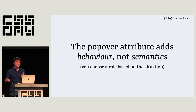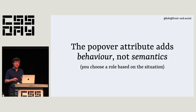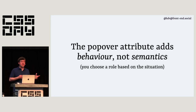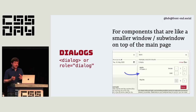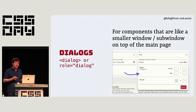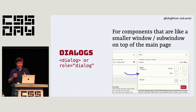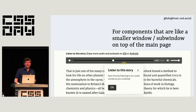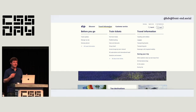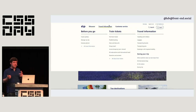Popovers don't have one specific semantic — that's one of the reasons it's an attribute, not an element. The first semantic option is dialog. You could have a dialog element that also has popover behavior. This is for components that are like a sub-window, such as a UI to choose how many people to take on Austrian Railways, or UI that tells you about a new feature, or even mega navigations — because those are almost like a page unto themselves with headings and links.